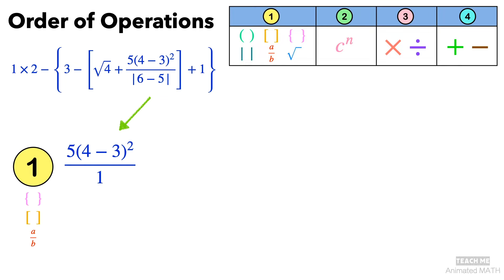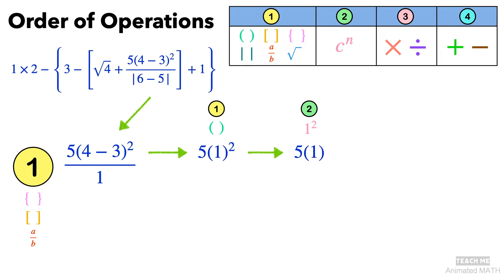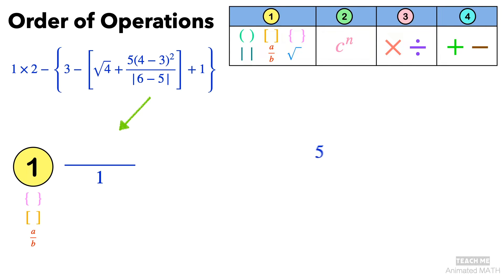Then we simplify the numerator, also following the order of operations. Step 1: simplify the expression in the parentheses. Step 2: evaluate the exponent. Step 3: perform the multiplication. Step 4 doesn't apply, so we can continue to follow the order of operations for our fraction. Now we can simplify our fraction of 5 over 1 to just 5. A fraction can be thought of as a division operation.